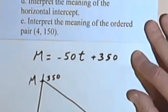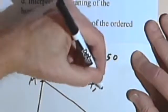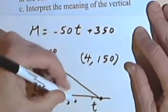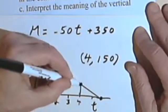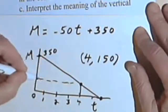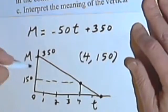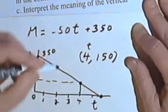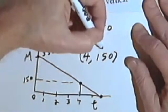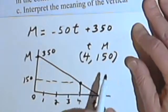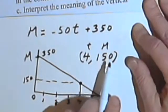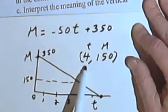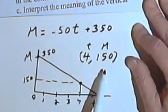Interpret the meaning of the ordered pair (4, 150). The first part is the independent variable, so 4 is time in hours. The second part, 150, is the dependent variable — the amount of money he has. So this ordered pair is saying that when he's been playing the slots for 4 hours, he has $150 left.